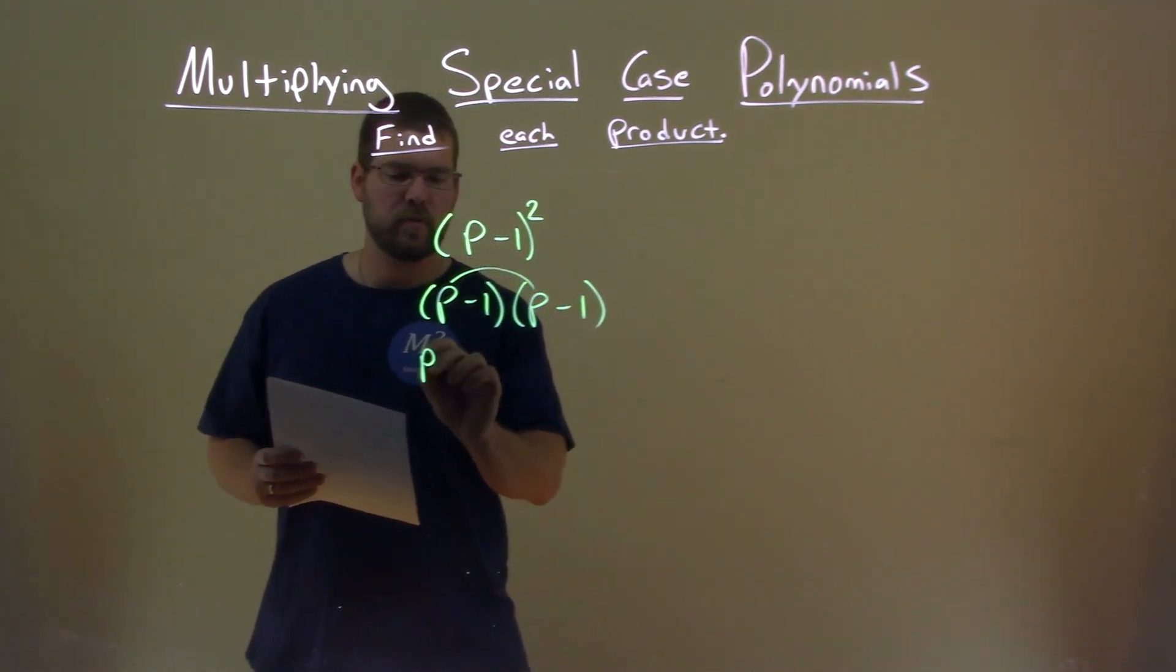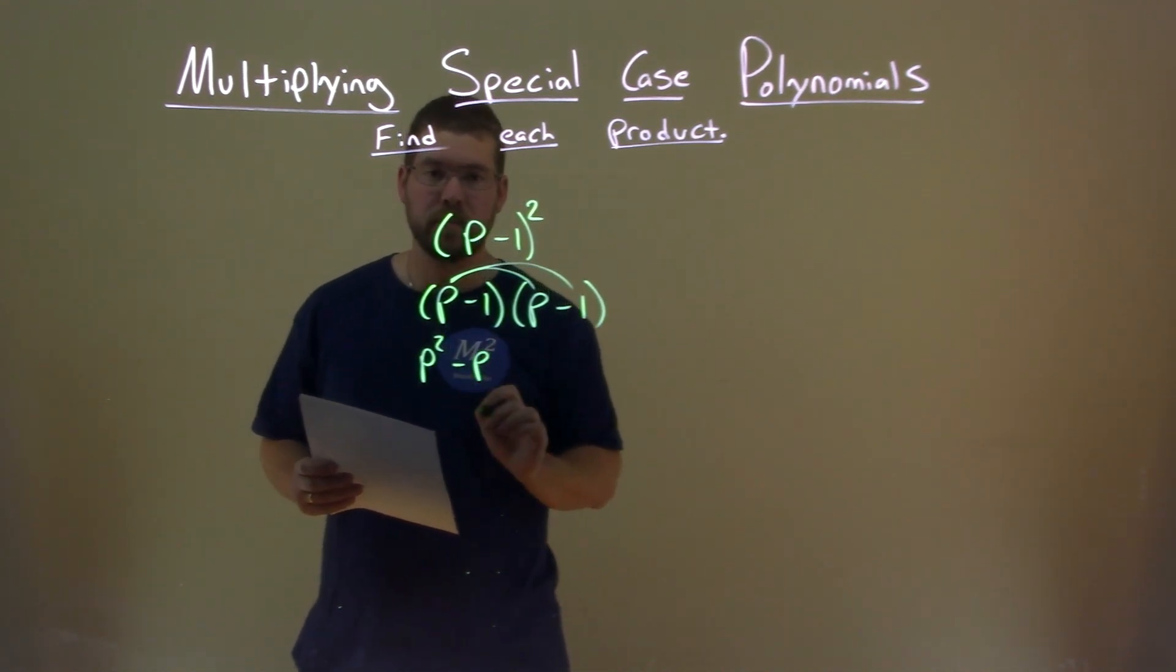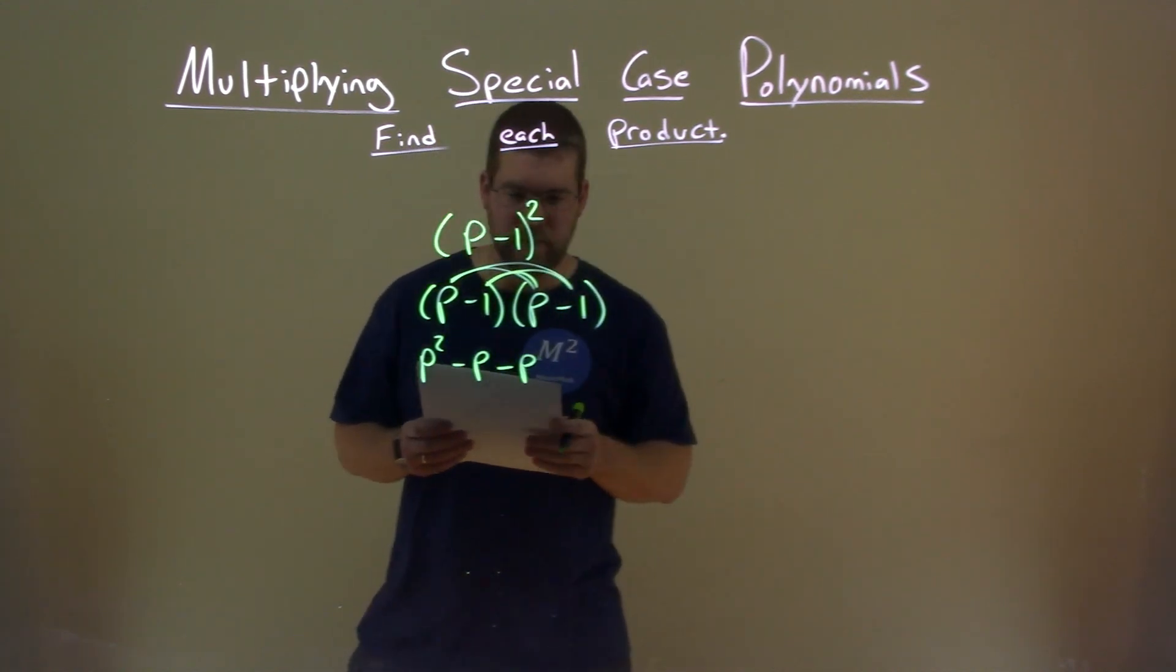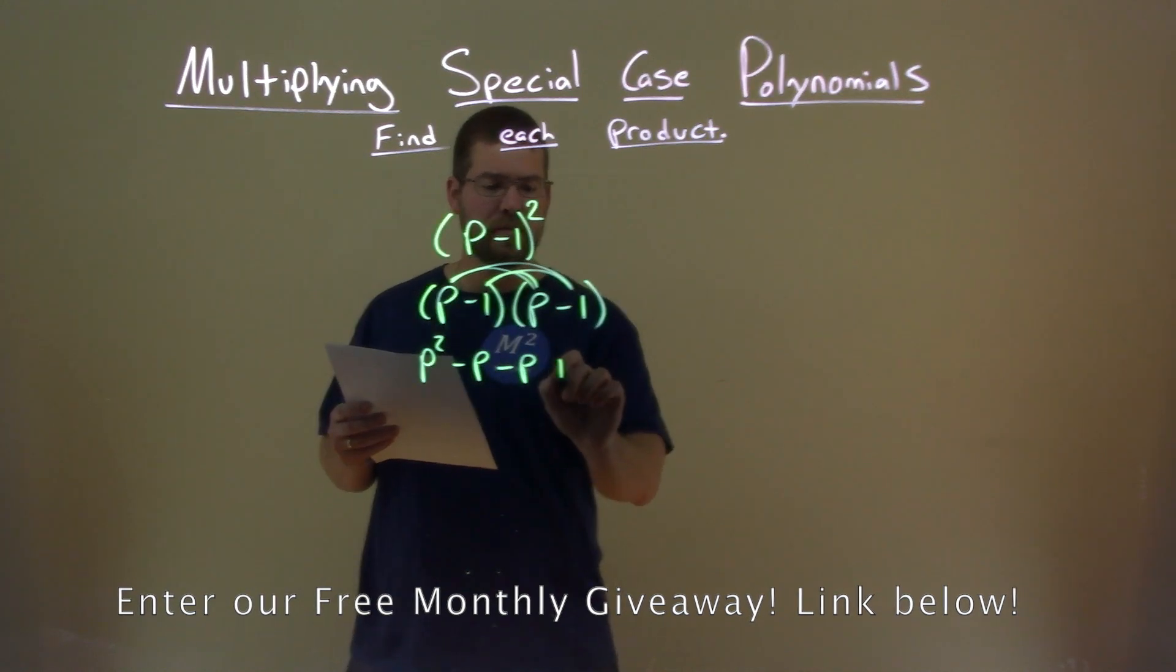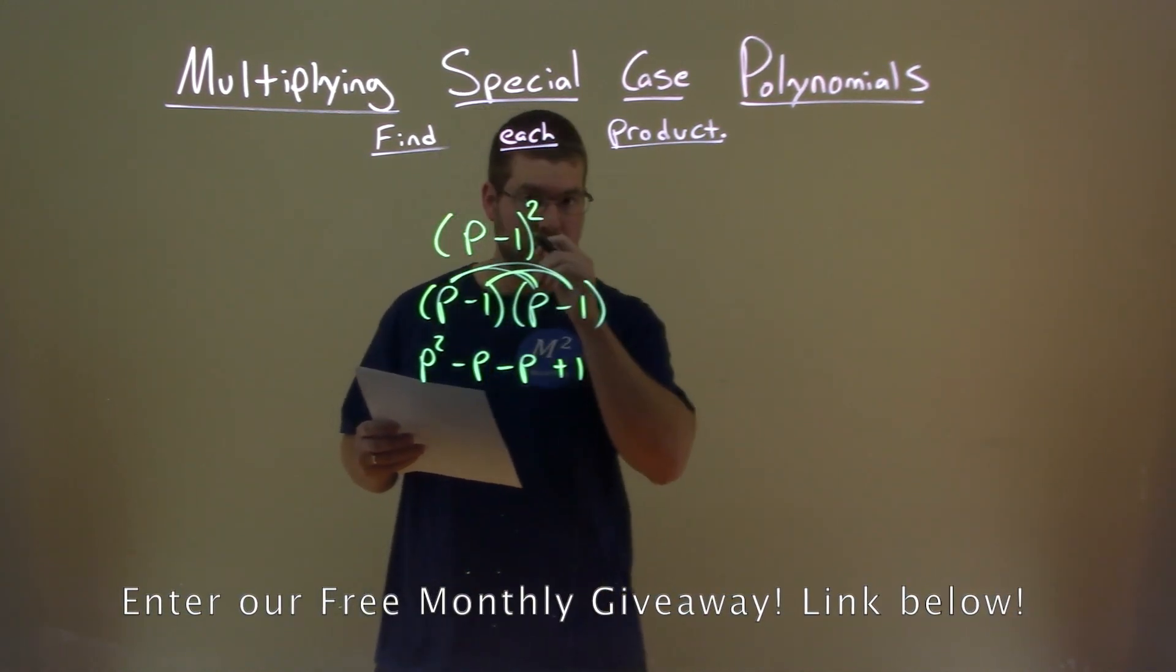p times p, p squared. p times a minus 1 is a minus 1p. Minus 1 times p, again, is a minus p. And minus 1 times a negative 1 is a positive 1. Negative times a negative is a positive 1.